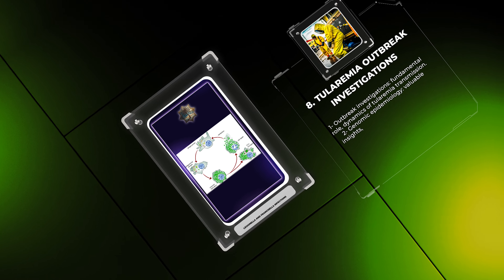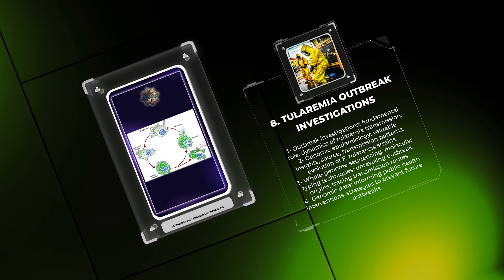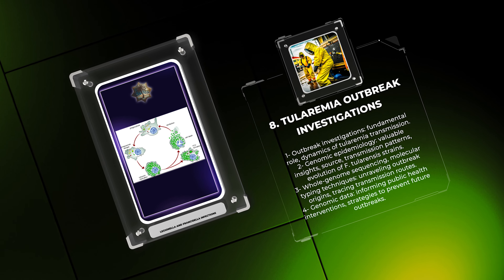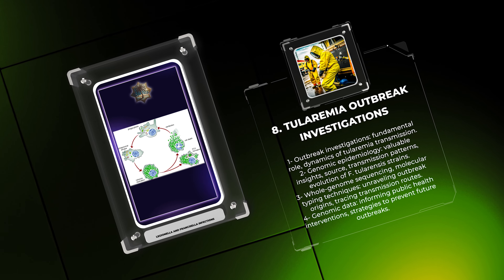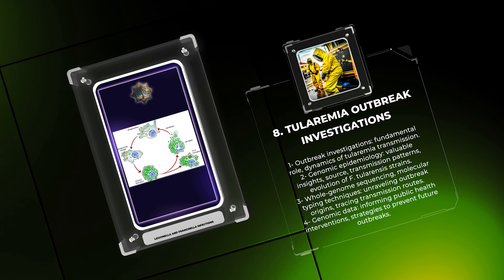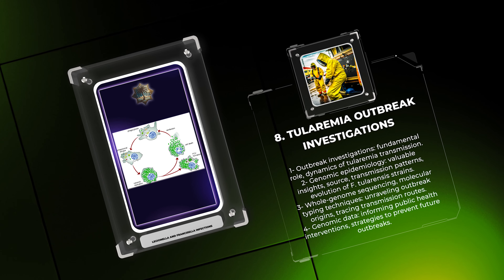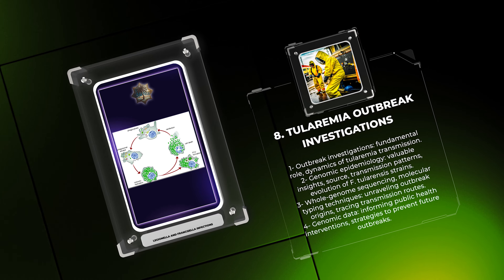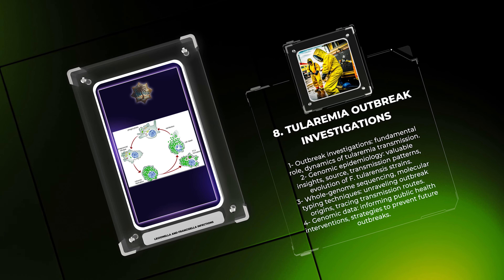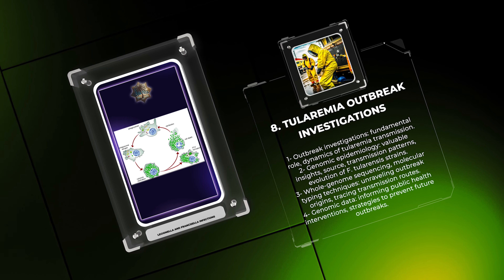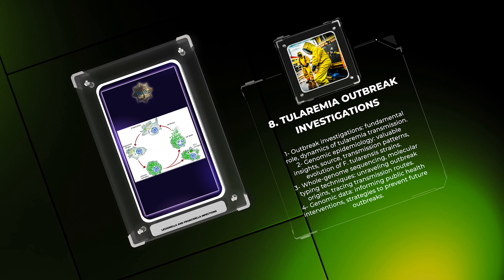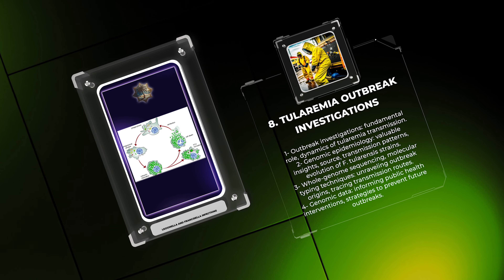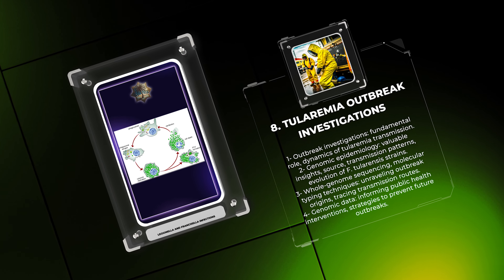Francisella tularensis, the causative agent of tularemia, is a highly virulent intracellular bacterium. We will examine the intricate host-pathogen interactions that contribute to the pathogenesis of tularemia, exploring how F. tularensis evades immune surveillance, replicates within host cells, and modulates host inflammatory responses. Understanding these virulence mechanisms is crucial for the development of effective therapeutic interventions and vaccines.